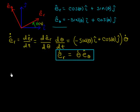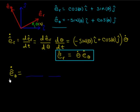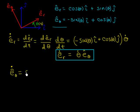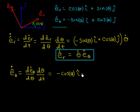Now find the time derivative of e-hat-theta using the same procedure. Applying the chain rule: the derivative of minus sine-theta is minus cosine-theta, and the derivative of cosine-theta is minus sine-theta, then multiply the whole thing by theta-dot. The term in parentheses equals minus e-hat-r, so e-hat-theta-dot equals minus theta-dot times e-hat-r.